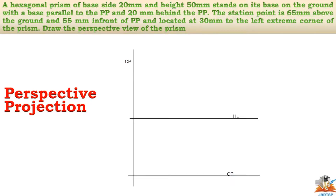The station point is 65mm above the ground — this is our given data. Based on this data, draw the horizontal line above the GP.